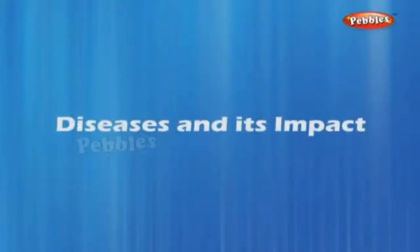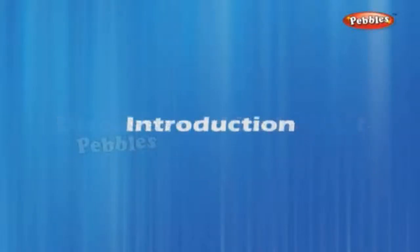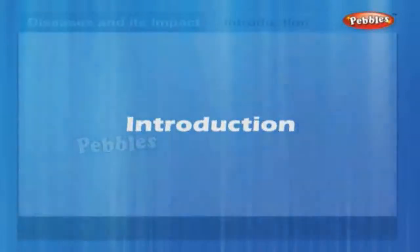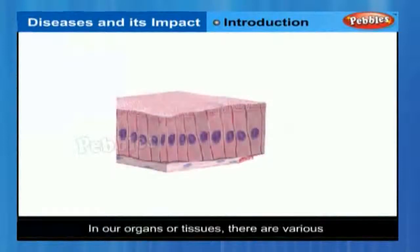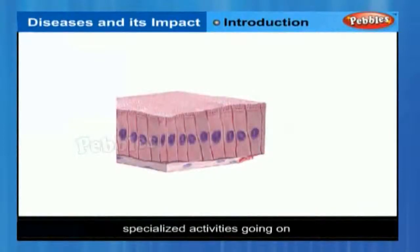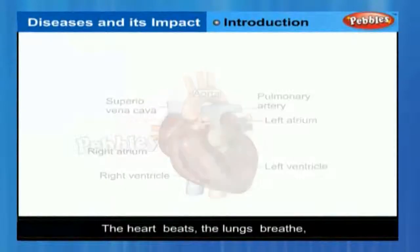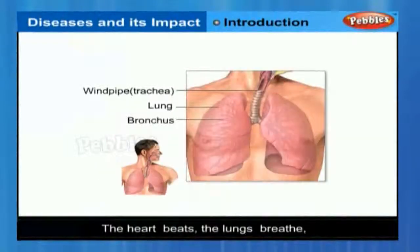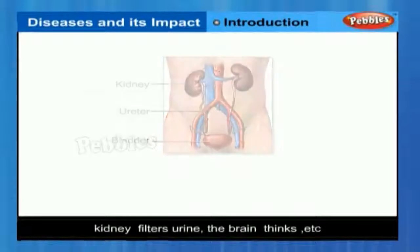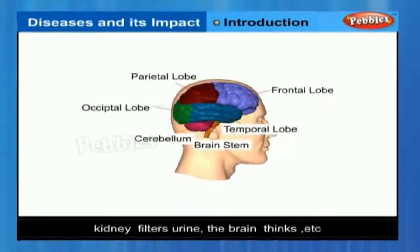Diseases and its impact — Introduction. In our organs or tissues, there are various specialized activities going on. The heart is beating, the lungs are breathing, the kidney is filtering urine, the brain is thinking. All these activities are interconnected.